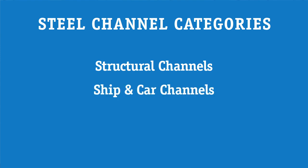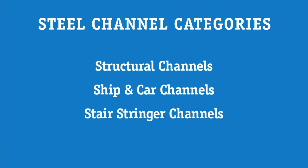Steel channel can be divided into the following categories: structural channels, used in various construction and manufacturing applications; ship and car channels, a set of sizes developed for use in the construction of marine vessels and automobiles; stair stringer channels, a set of sizes developed for use in the construction of stair castings; and finally bar channel.